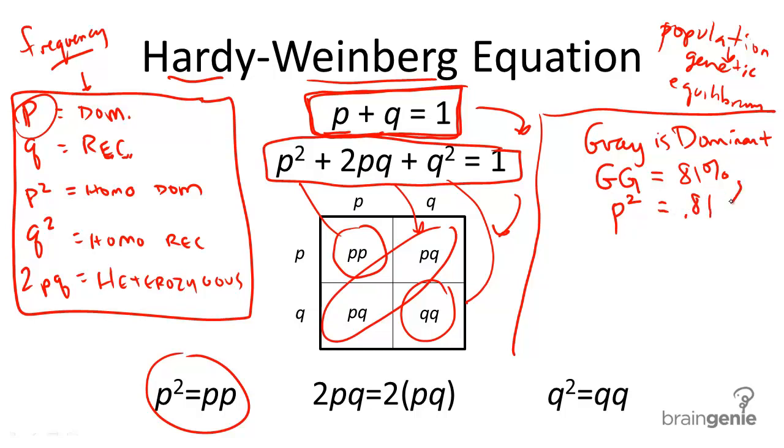We just converted the percent into a decimal. If p squared equals 0.81, it's pretty easy to solve for p. p equals 0.9. So, take the square root of both sides to get 0.9.